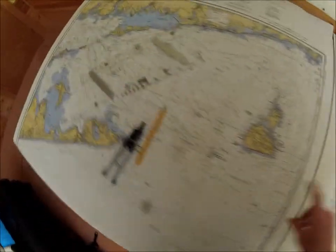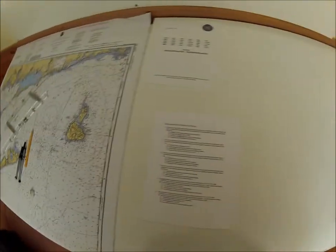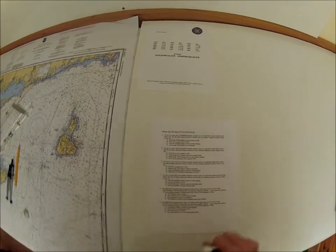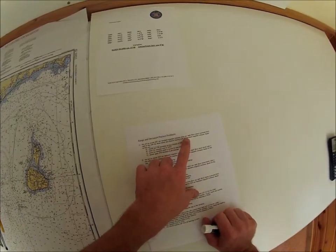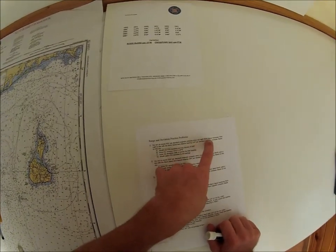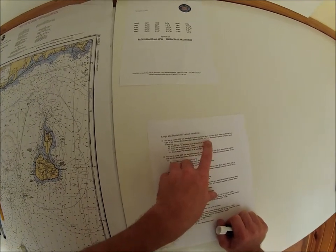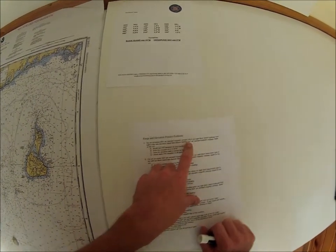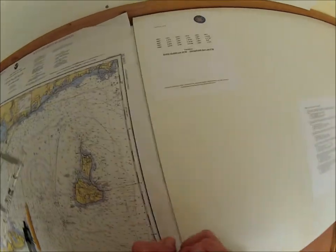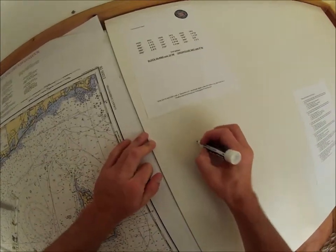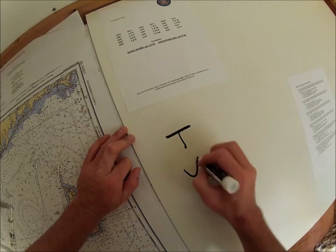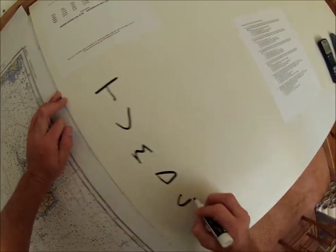So what we're doing here is we are checking our deviation table. It gives us two points in line, Block Island Southeast Point in line with Block Island Arrow Beacon, and then it gives us a compass bearing. So what we need to do, I always just set up this template: T, V, M, D, C.